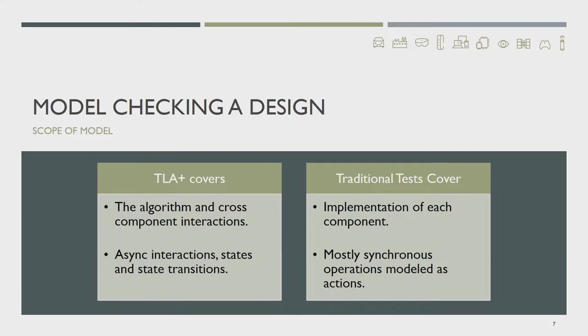We started using TLA Plus when we already had our first version of the system in production. For subsequent changes, we did not model everything in production — rather, we focus on things we are changing. Sometimes when we are modifying an aspect, we realize a bug in the existing system that we had designed previously. Our scope of verification is algorithms and cross-component interactions — state machines and async calls: calls over the network, to the file system, to another process or thread, and async locks.